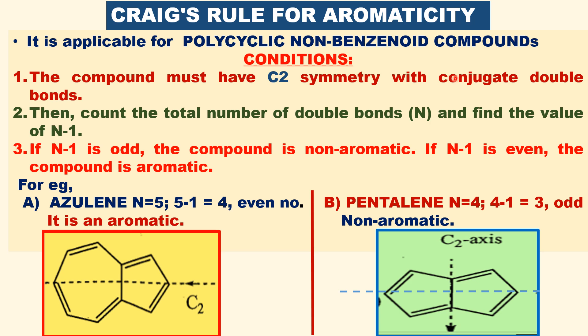With conjugated double bonds, that is alternate single and double bonds. Then, the second point: count the total number of double bonds.